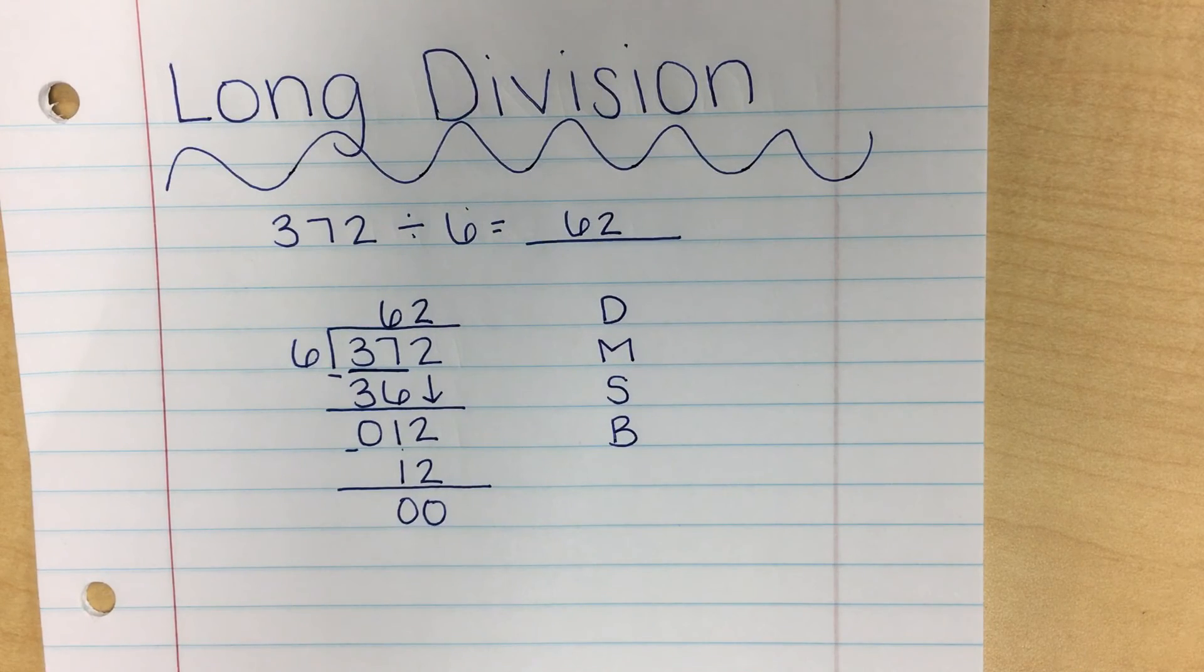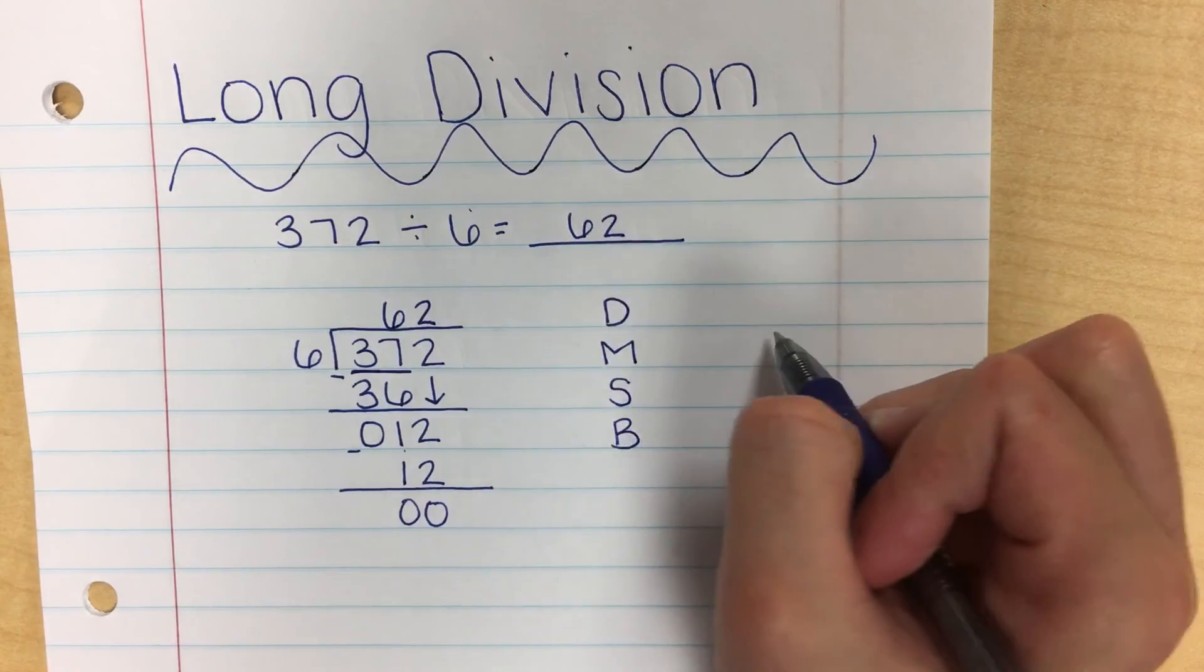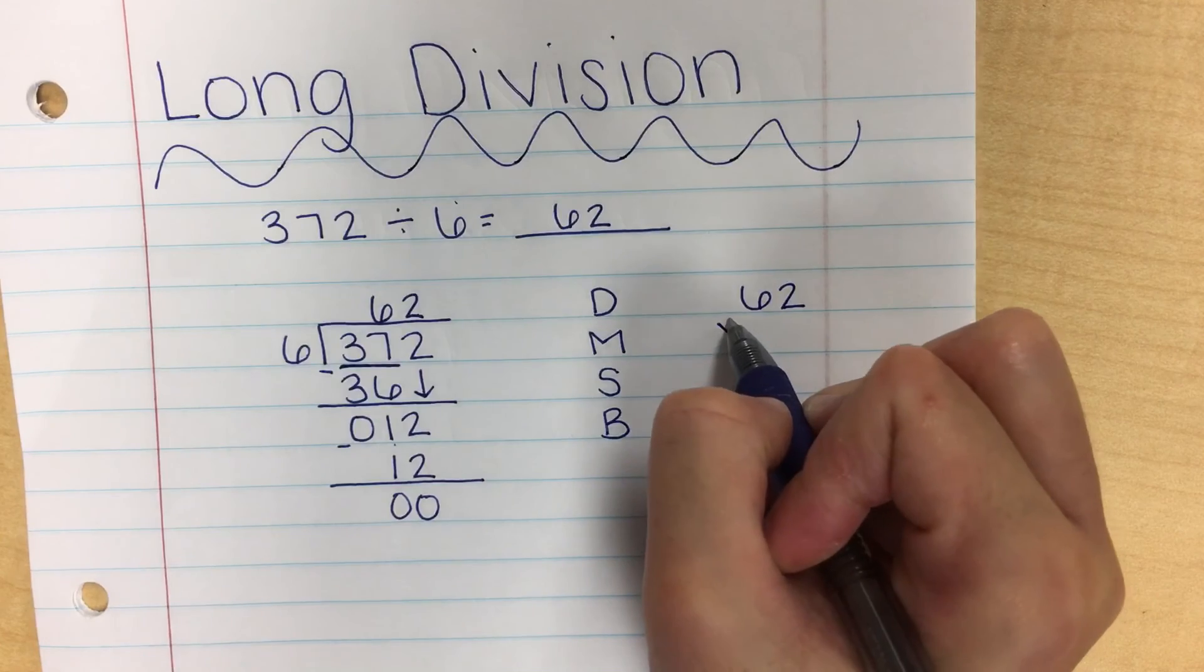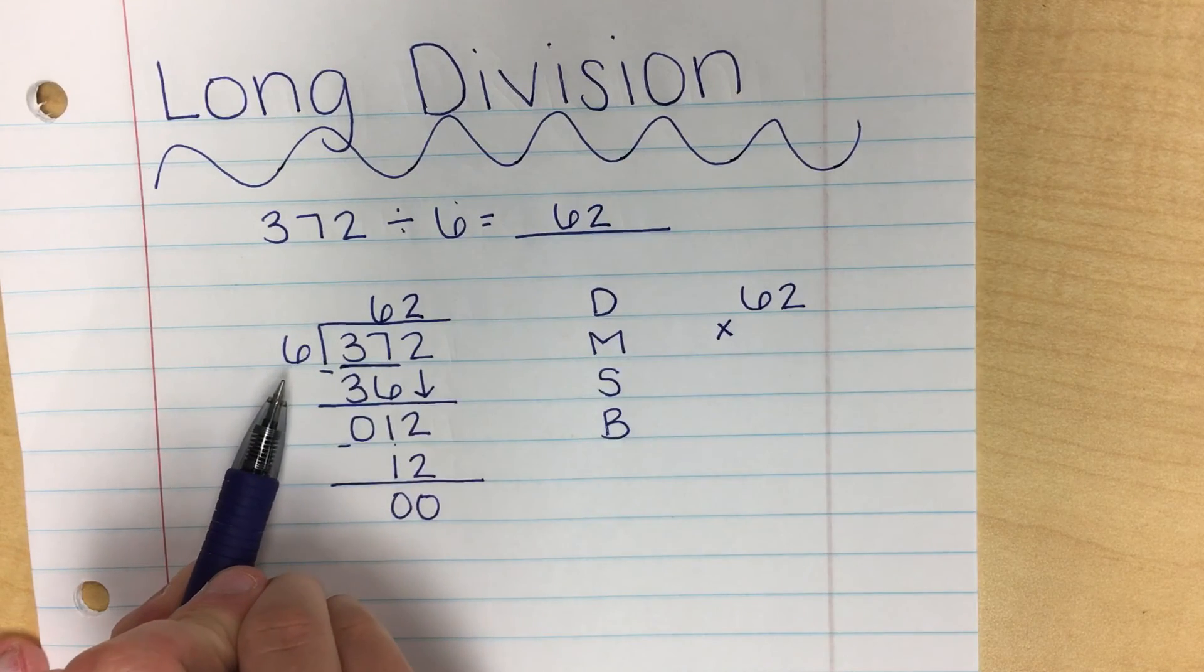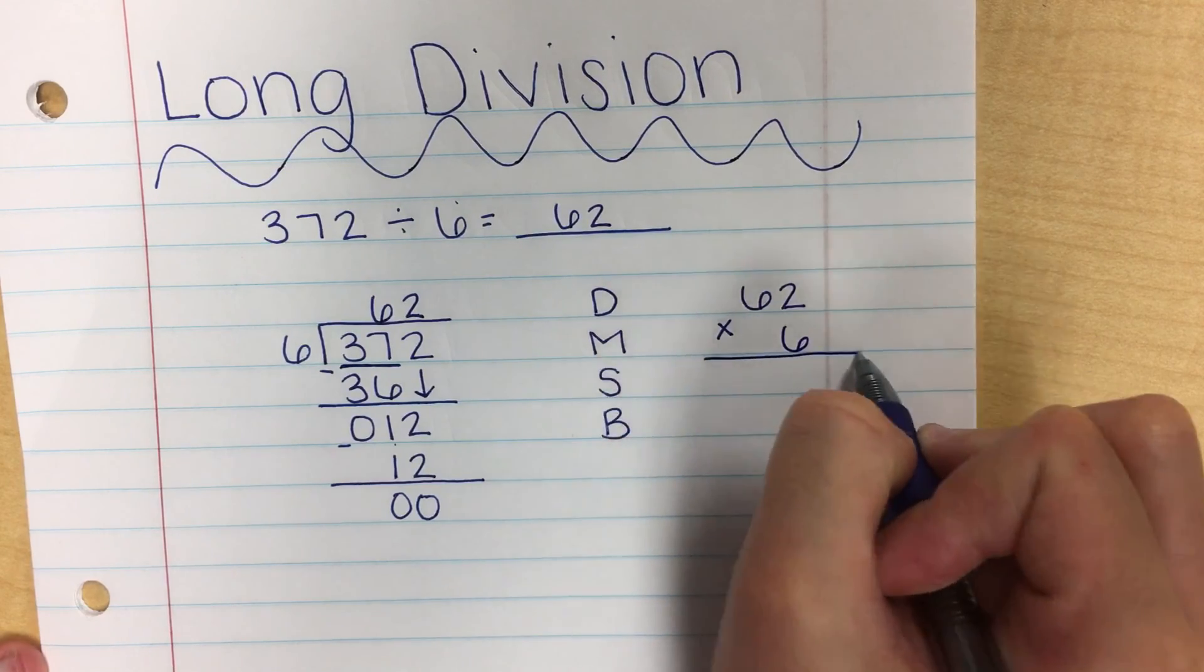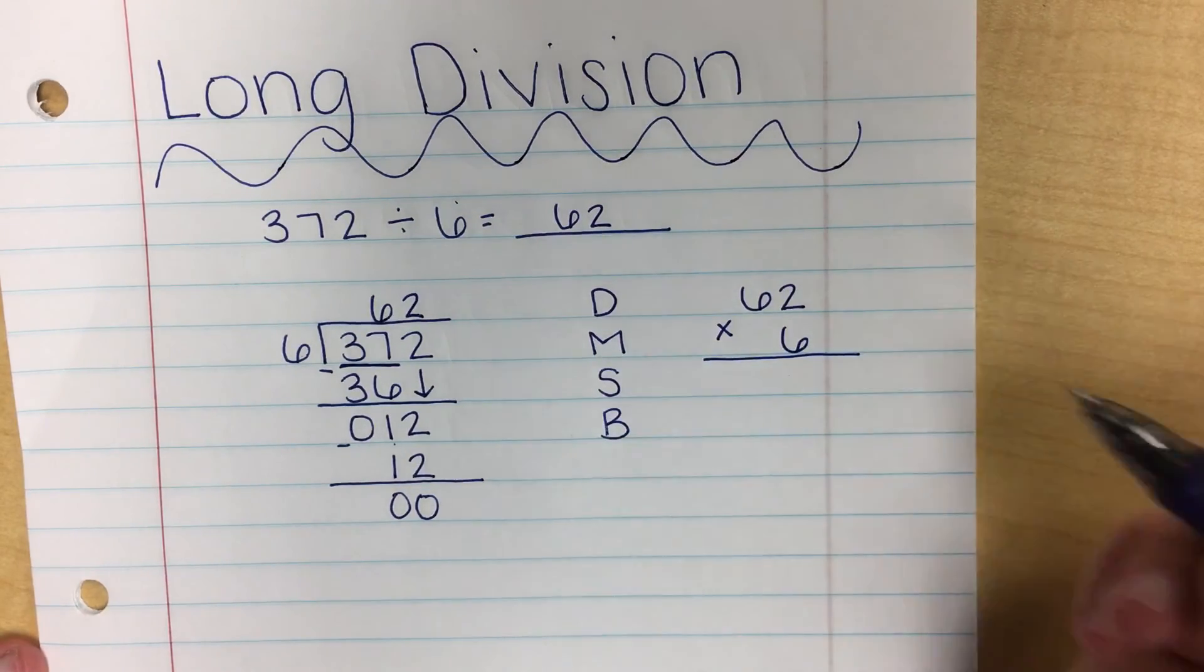To check your answer, you can do 62 times whatever your divisor is. Our divisor here is 6. So 62 times 6.